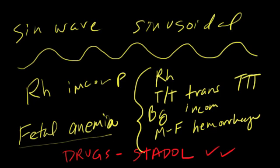Another interesting bit - I don't know that you'll ever see a test question on this, but another interesting pattern is a variable deceleration with shoulders. Instead of a V shape, you get this W shape, and this is due to a nuchal cord.